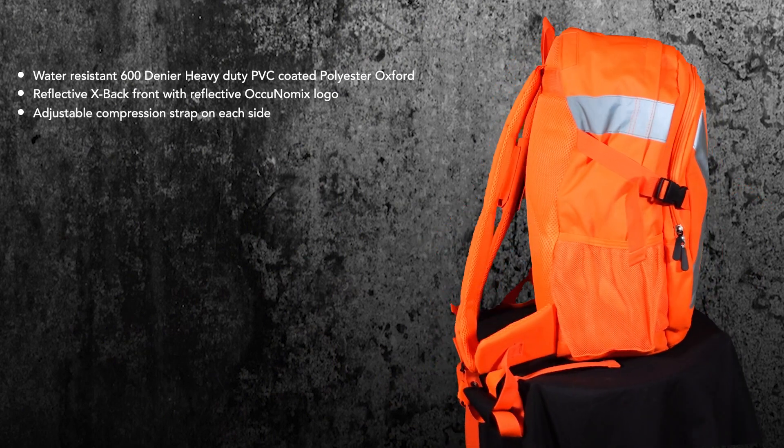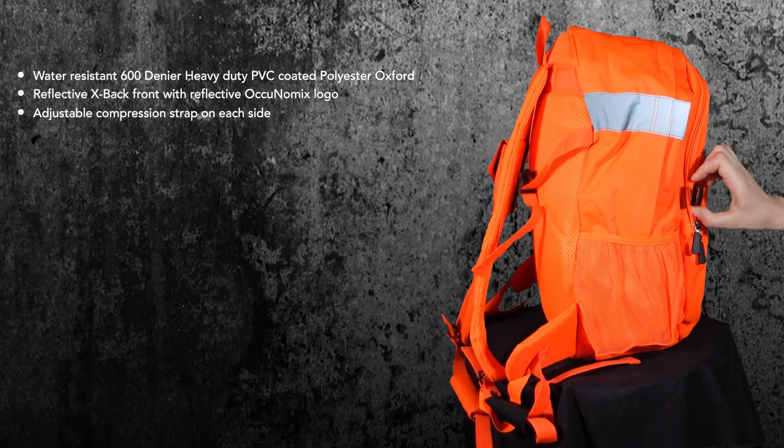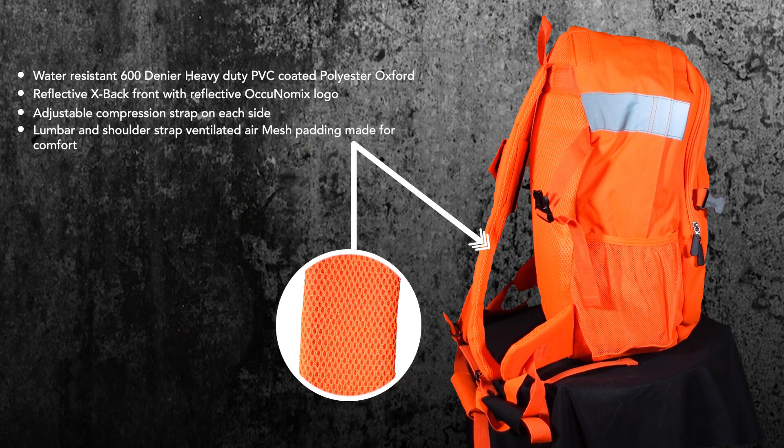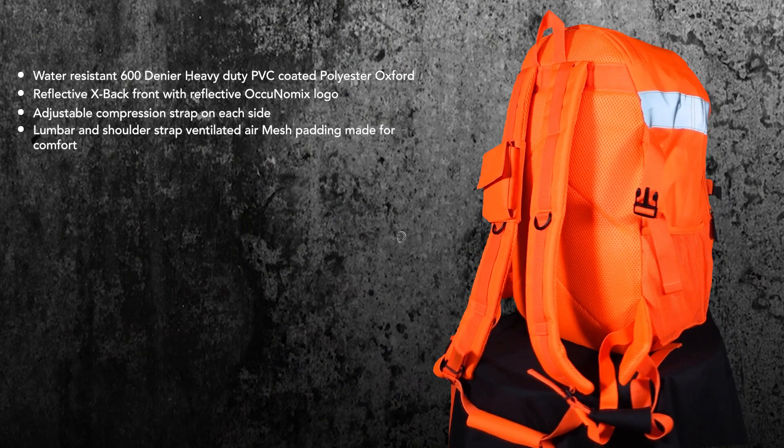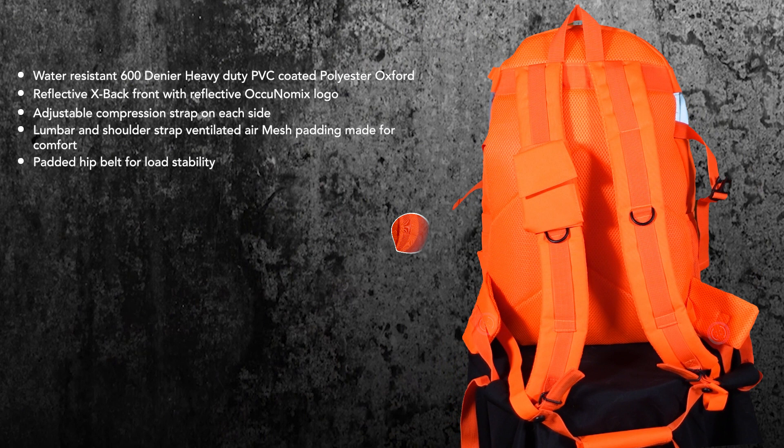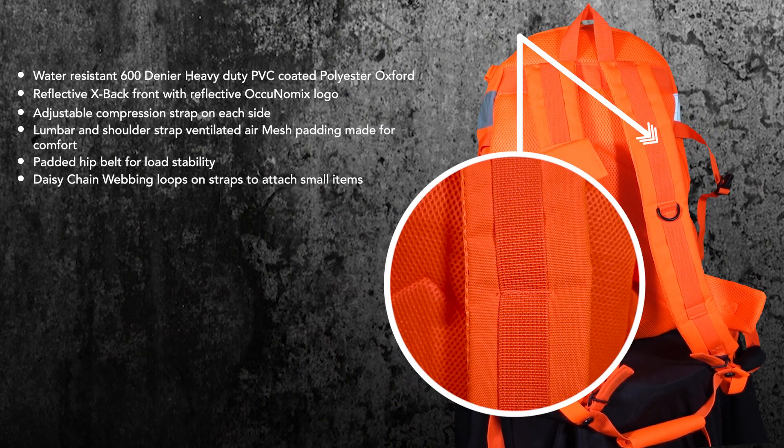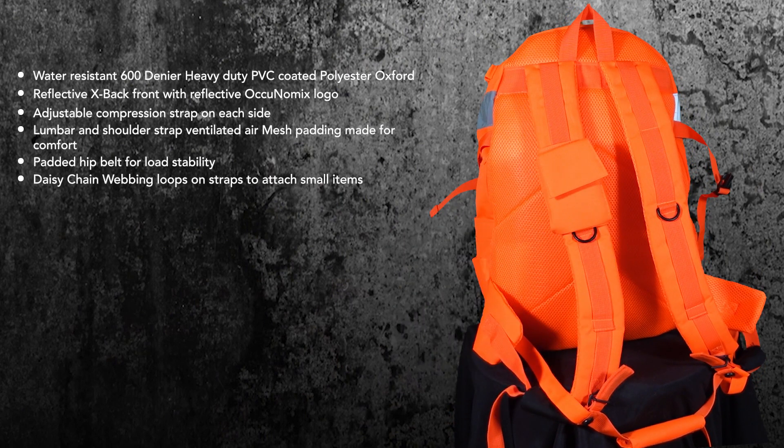Adjustable compression strap on each side. Lumbar and shoulder strap ventilated air mesh padding made for comfort. Padded hip belt for load stability. Daisy chain webbing loops on straps to attach small items.